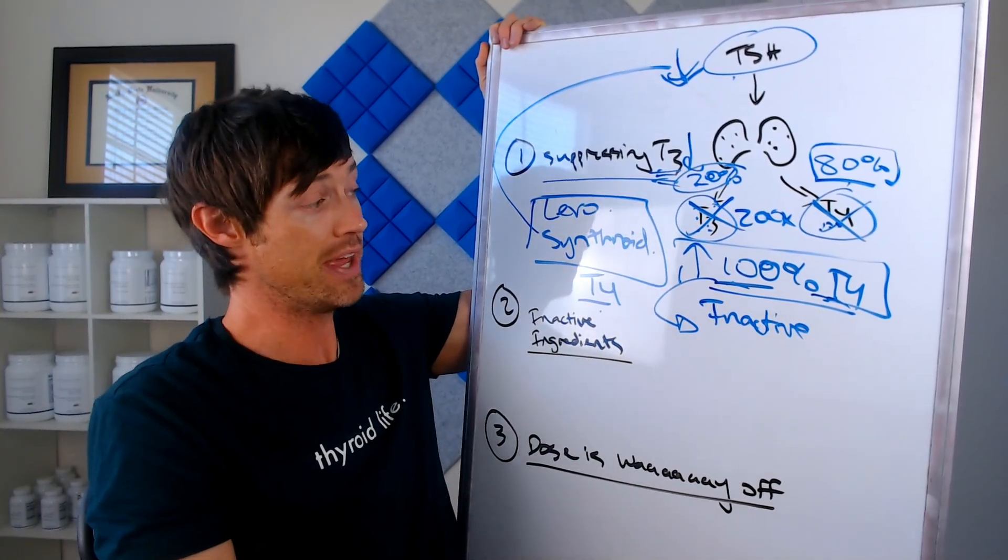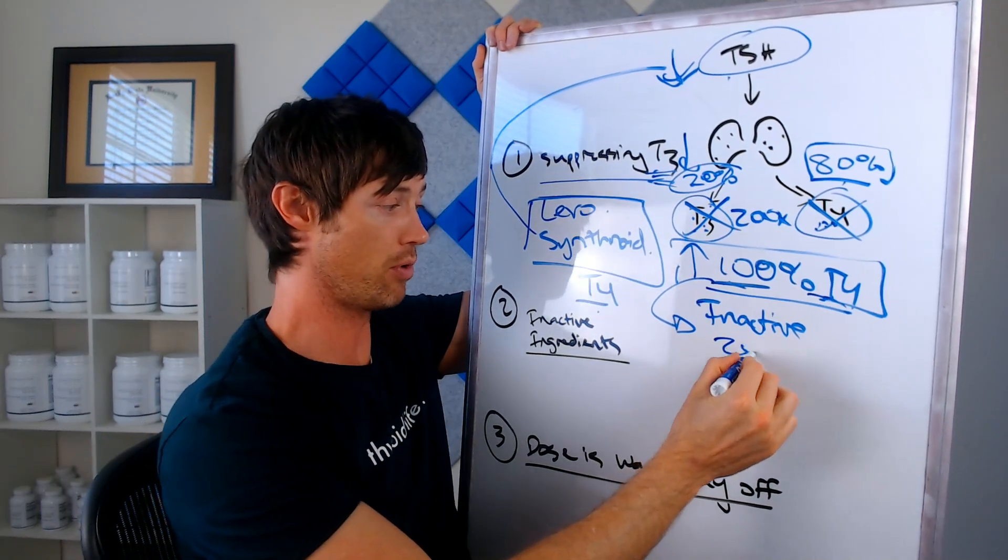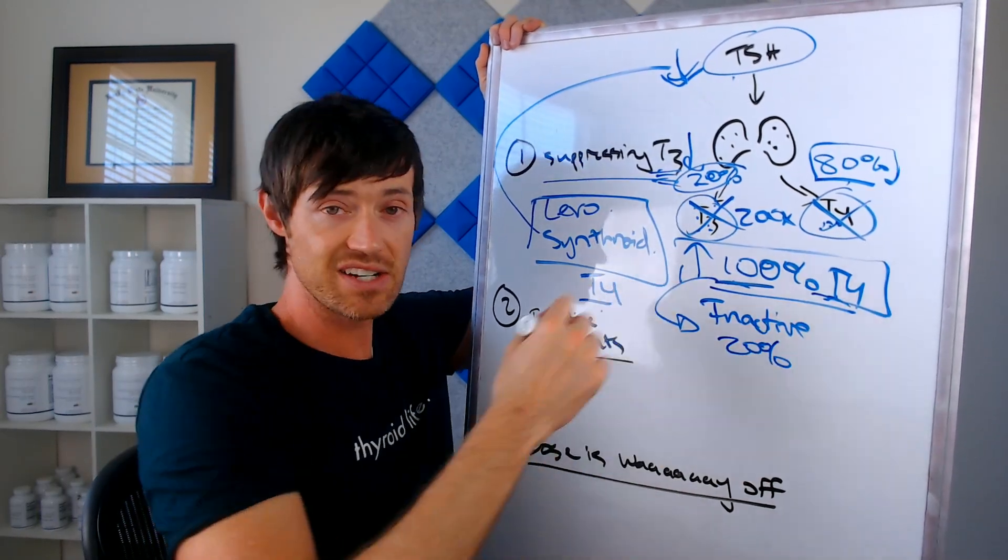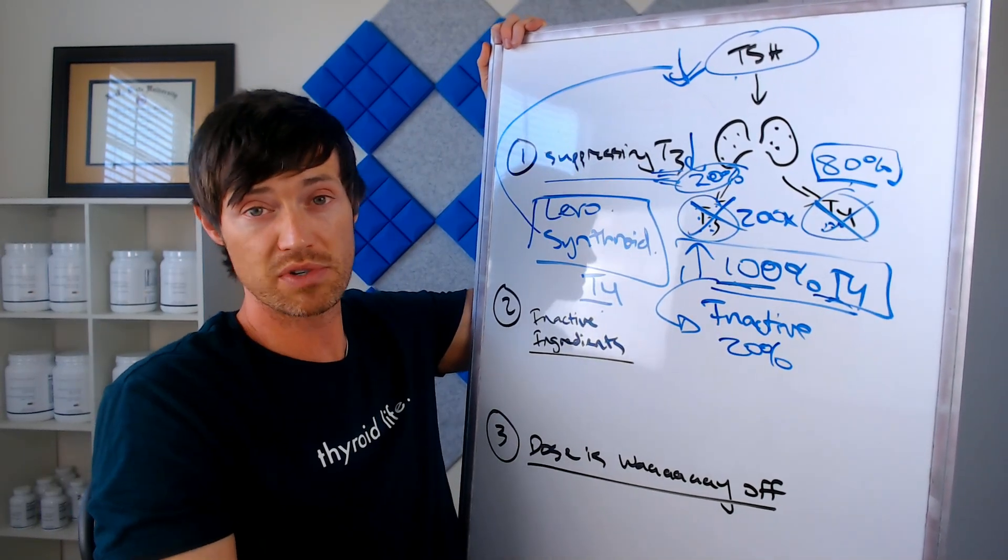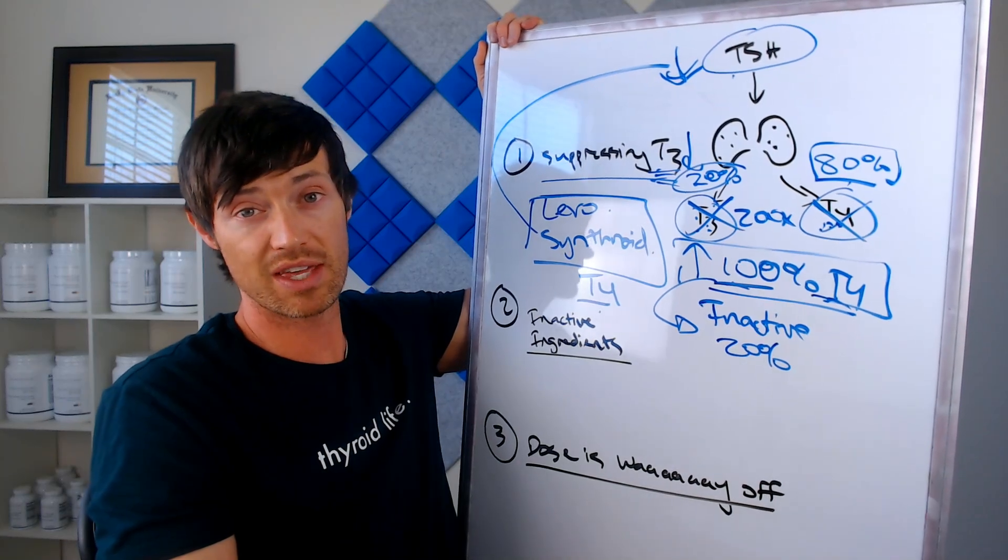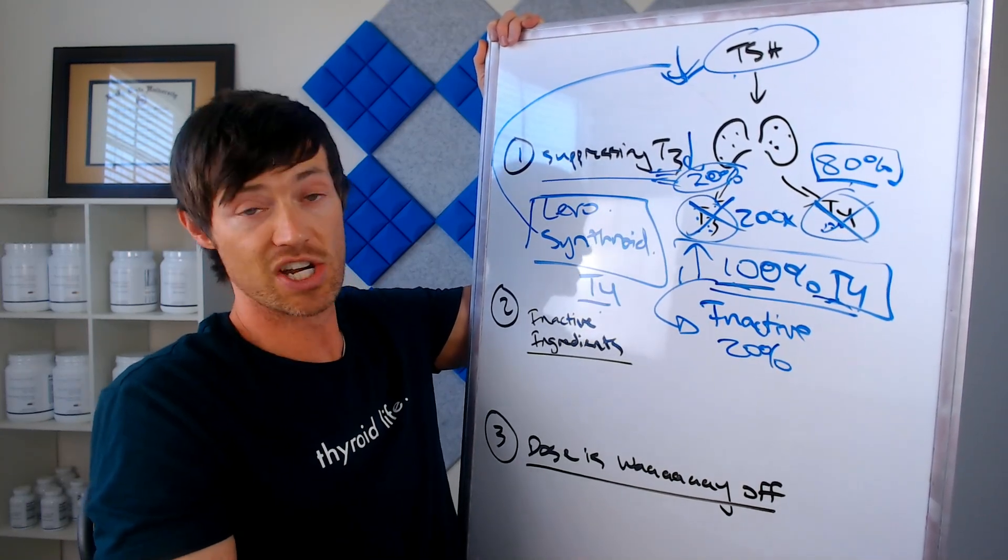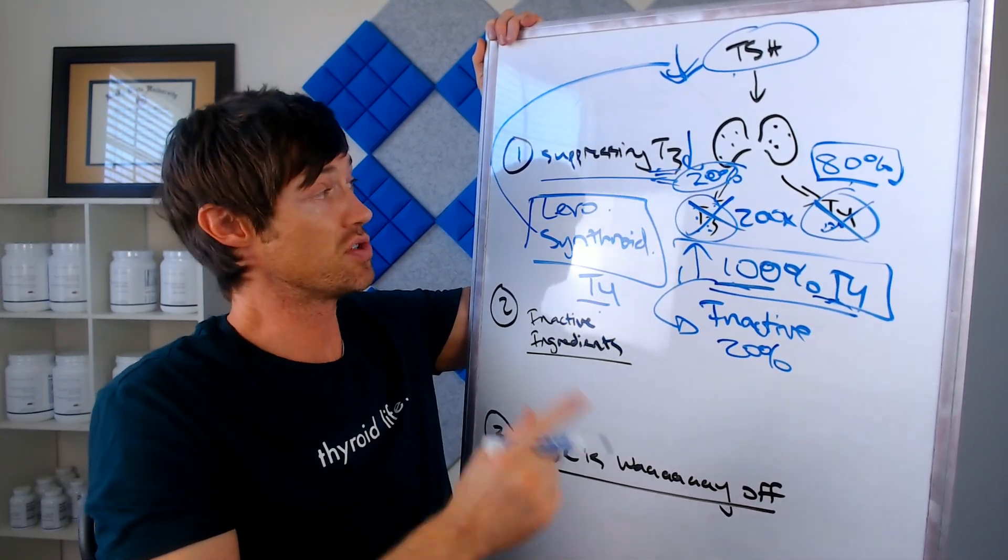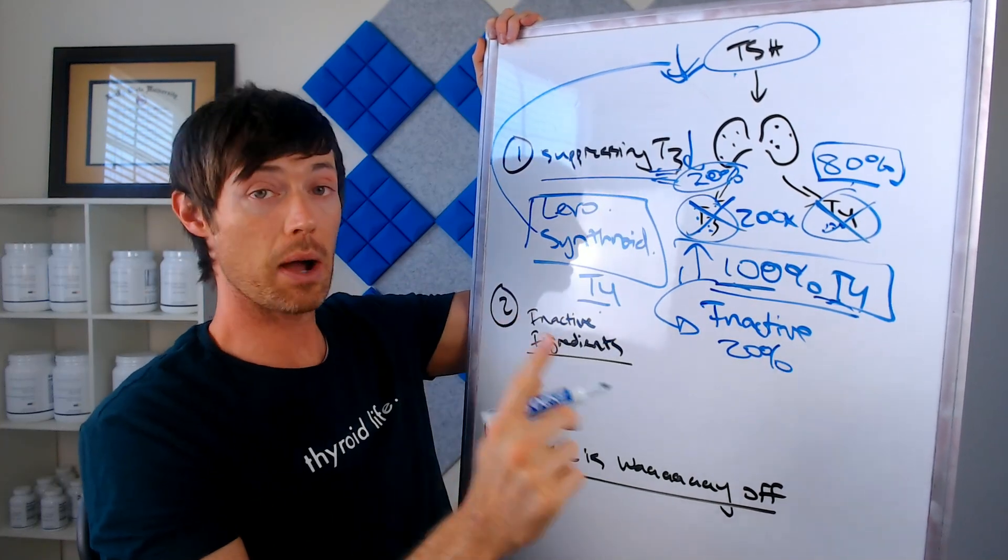This is what occurs in some people because it turns out that about 20% of people, they don't convert very well. They can't take that T4 and turn it into T3. So when you give them T4, you're giving them more of the same thing that they can't convert into T3. And it just makes the problem that much worse. So that's number one, but we're not done yet. There's actually a couple others.